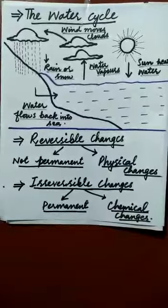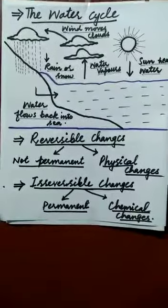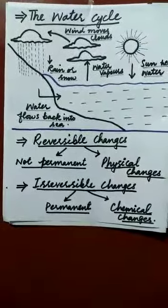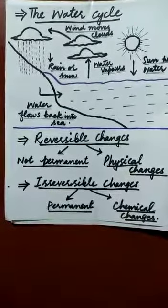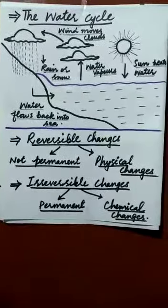In the first step of the water cycle, the sun heats up water and makes it evaporate. Water becomes invisible water vapors.